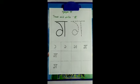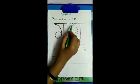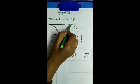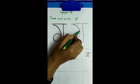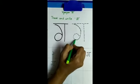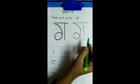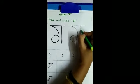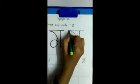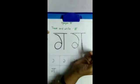Now I will show you how to write Vyanjan G. First, we will trace on this dotted line. We will trace like this — a curve line, and the same way in. Then a standing line, and a slipping line on the top. G.